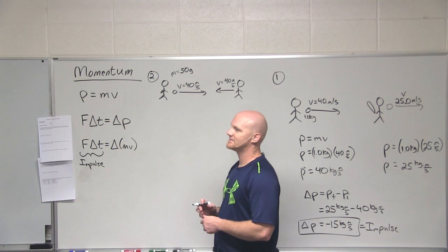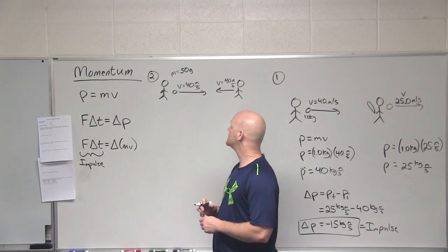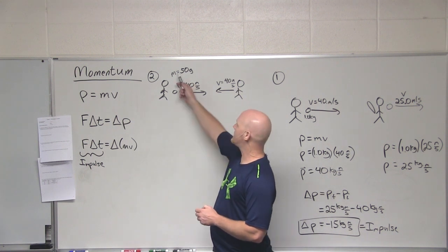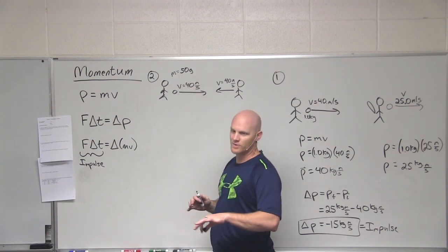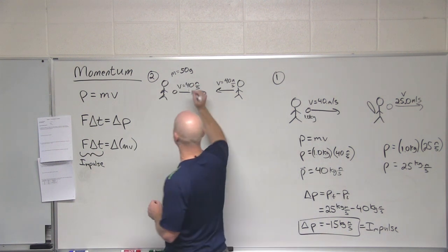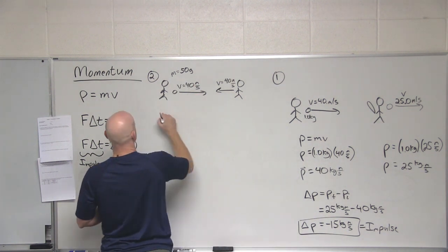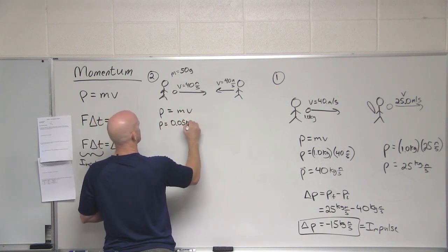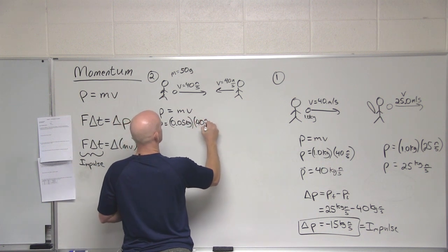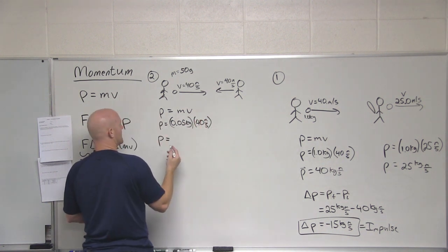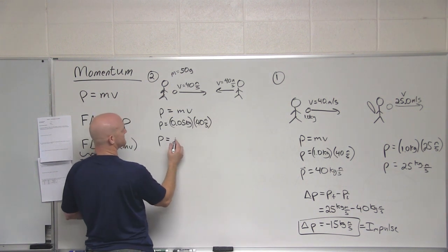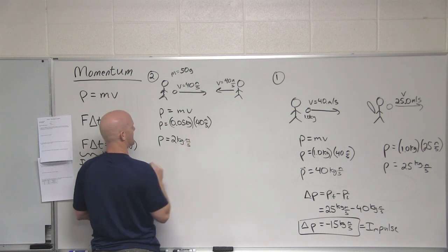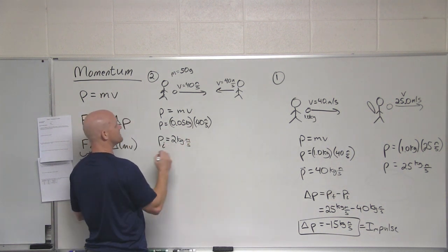Careful. Well, it wouldn't have been 200 anyways, by the way, right? Because five times four is 20, and then two zeros would be 2000, so it would have been 2000 anyways. But we got to change some units here anyways. 50 grams, what's that in kilograms? Yeah, so we got 0.05 kilograms times 40 meters per second. And what do we get for a momentum here? Two. Two to what? Two kilogram meters per second. Awesome, two kilogram meters per second. So that's the initial momentum.